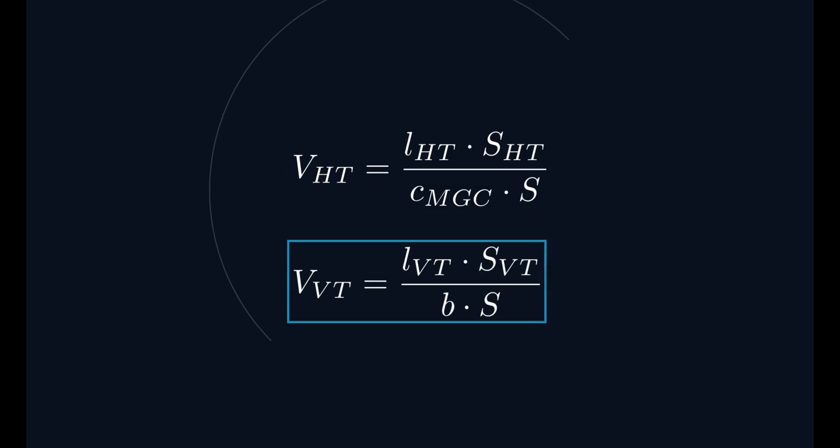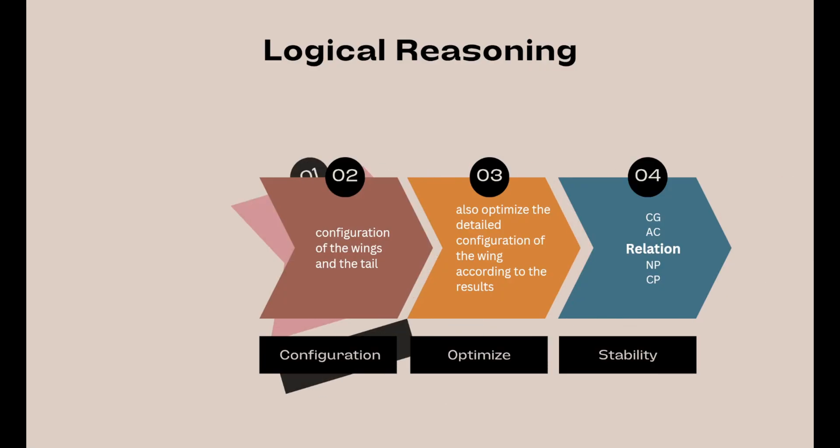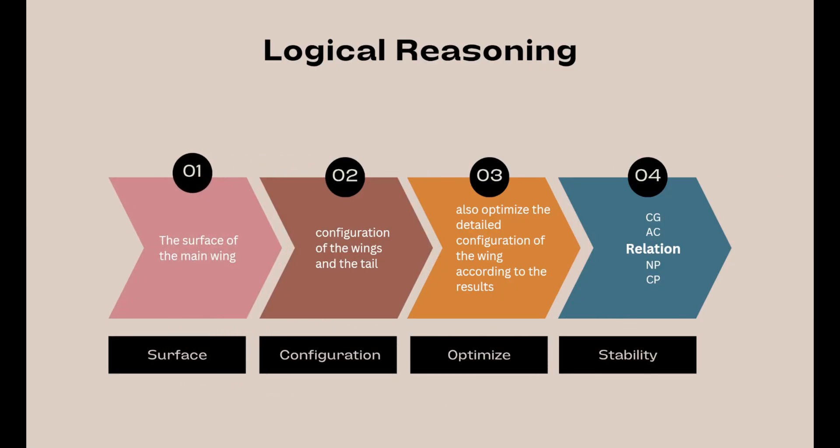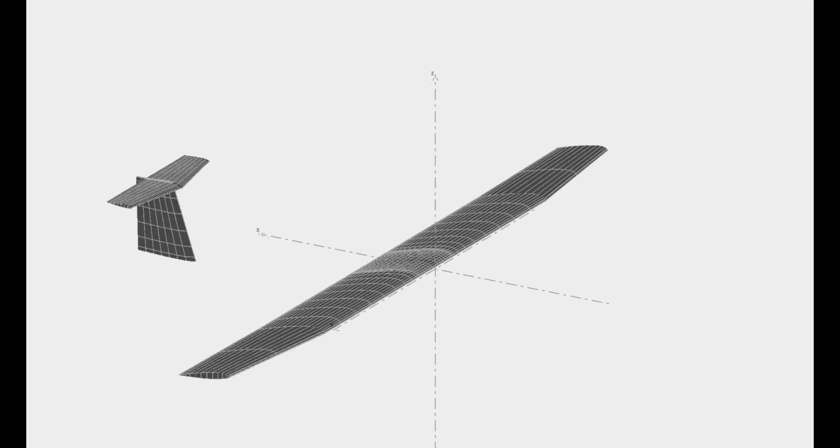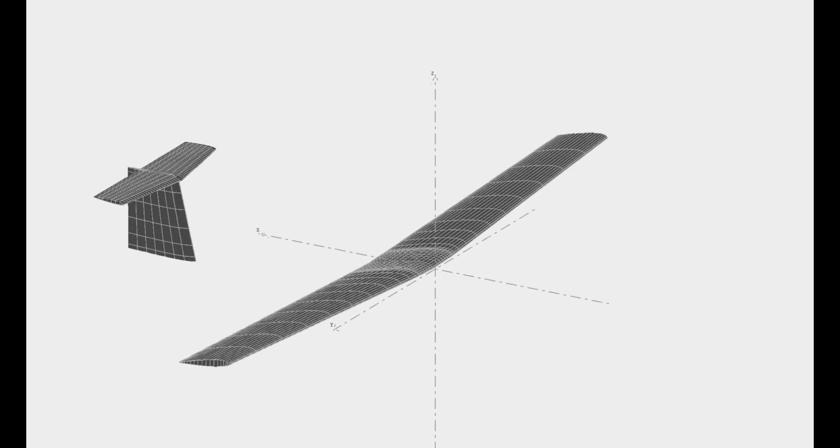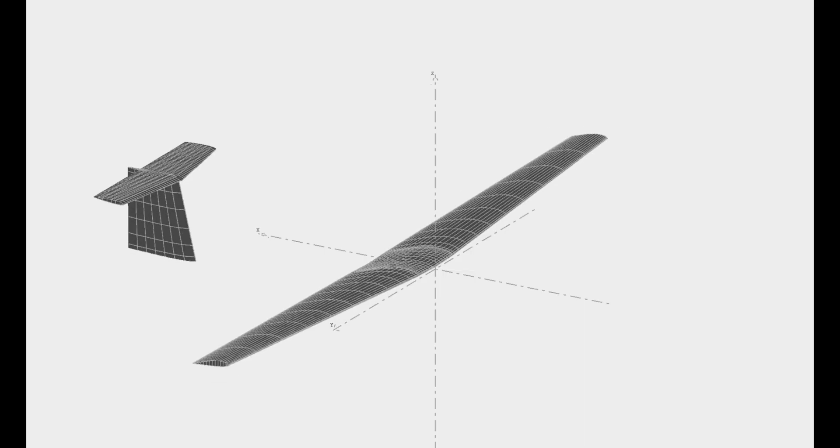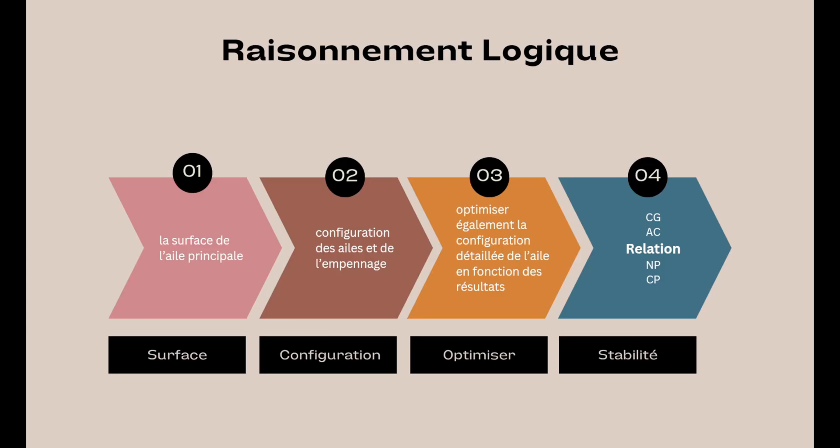Now, what's the relationship between the main wing and the tail? There's actually a practical rule of thumb for this, which is mainly determined by the area of the main wing. In the end, I work backward from the main wing area to arrive at the final stability results. While calculating the area, I also refine the detailed configuration of the wing based on the results so that the overall stability can be further optimized.